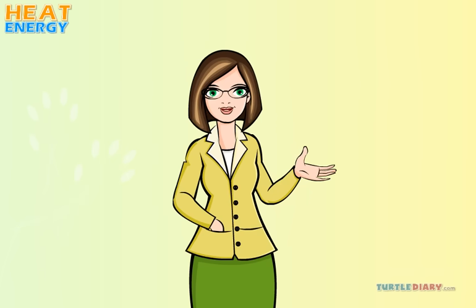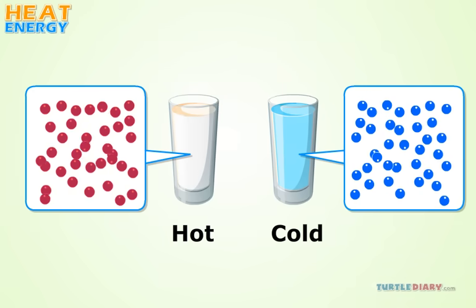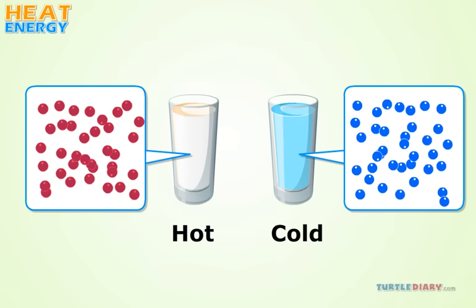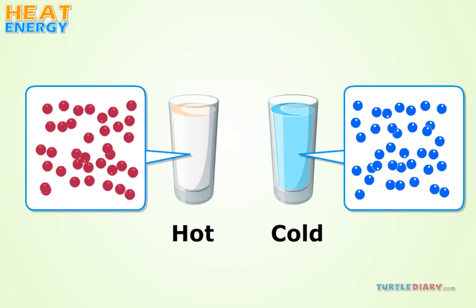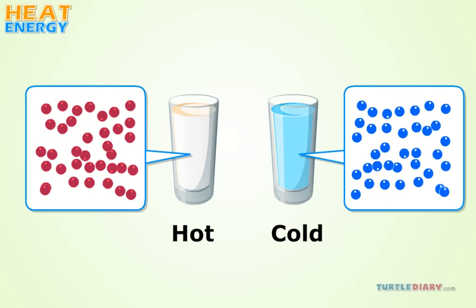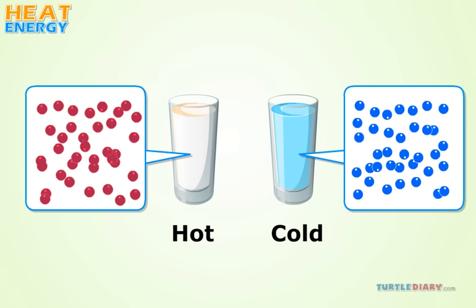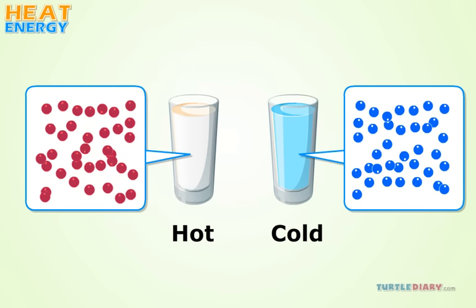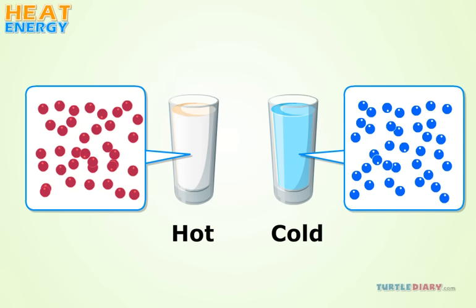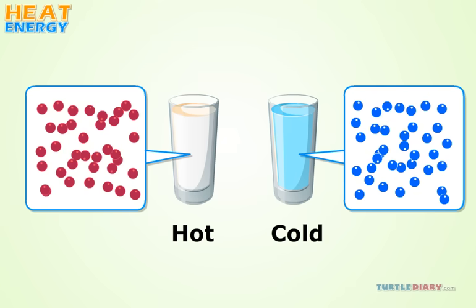Energy has to do with the movement of the particles that make up matter. If we were to look up close at the particles of something very cold, we would see them moving very slowly. If their movement is very slow, they have less energy than the particles that make up something that is hot.